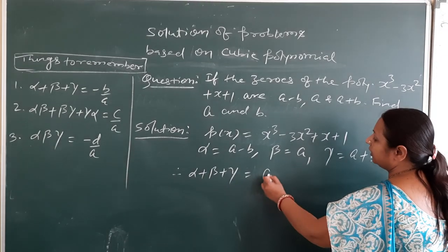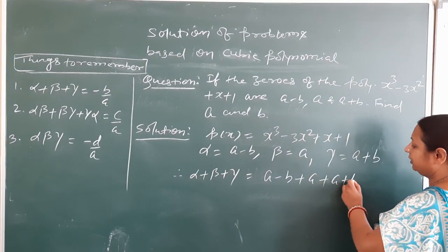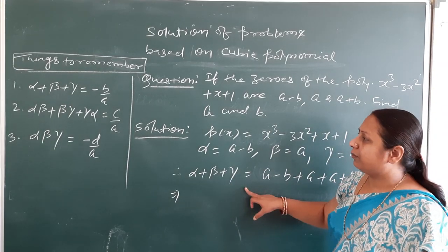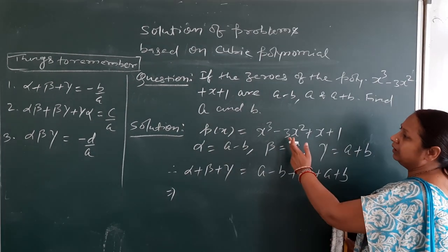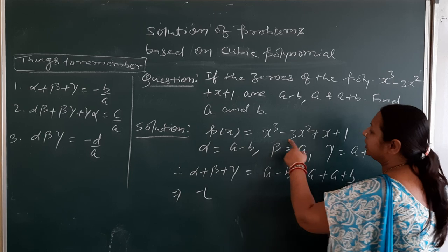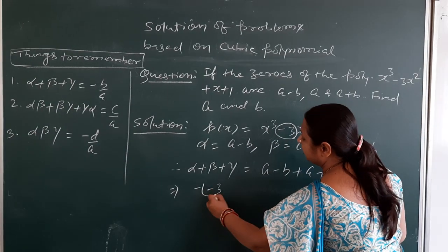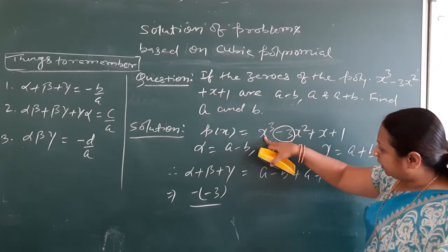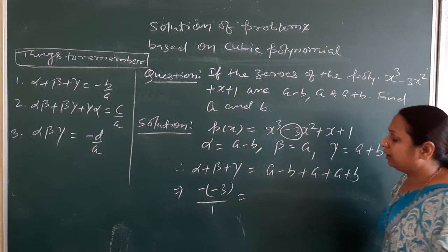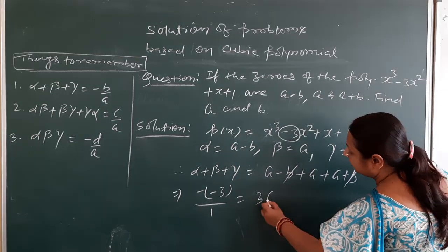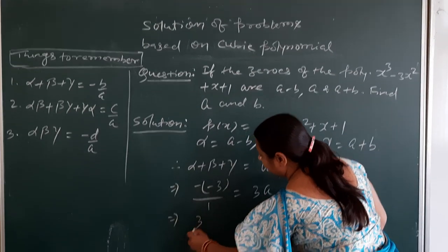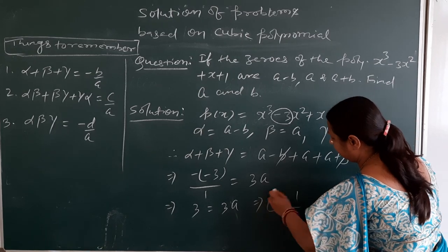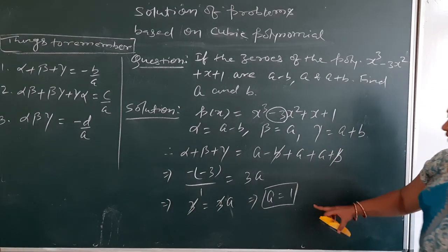By taking alpha plus beta plus gamma, we get (a minus b) plus a plus (a plus b) equals minus b by a. Since this is a cubic polynomial, the sum of zeros equals minus b by a. Here, in the polynomial, we substitute: the coefficient in place of b is minus 3, and a — the coefficient of x³ — is 1. So we get 3a = 3, therefore a equals 1.